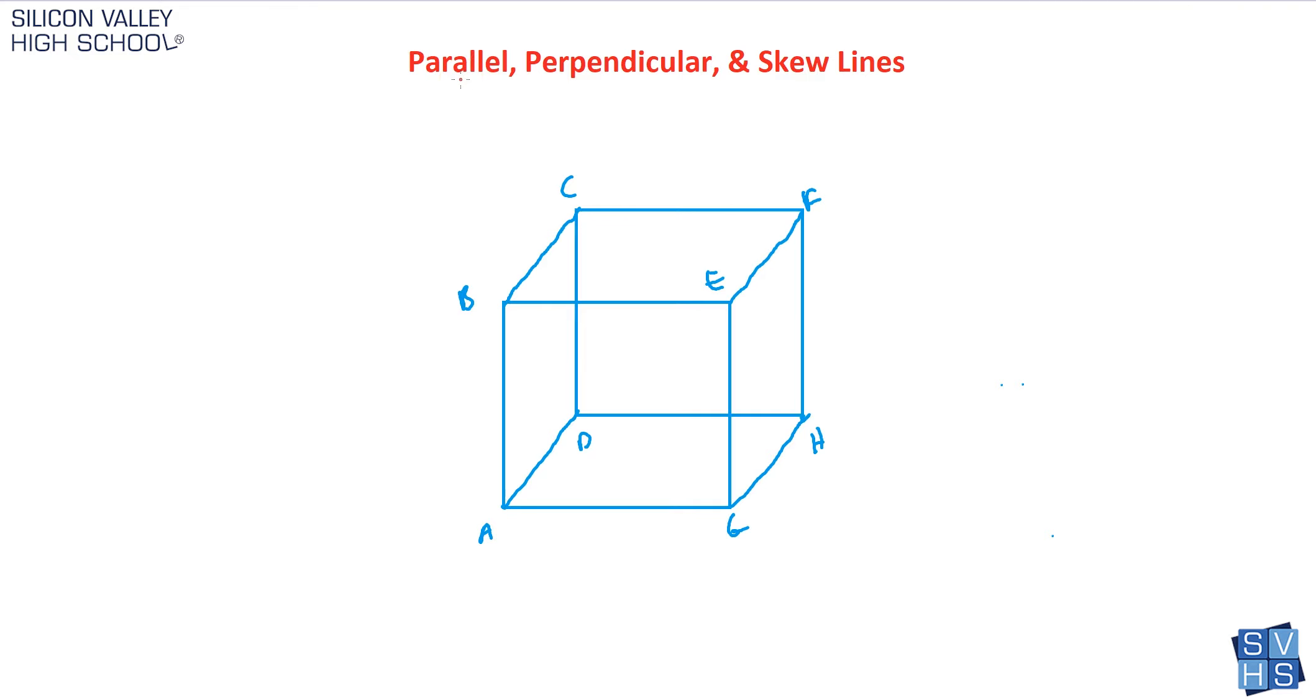Remember, parallel lines have to be on the same plane. If you look at the front face of this cube, that is a plane. The top of this cube, that is a different plane. Remember, it's a two-dimensional flat space that goes on forever in all directions. Another plane would be this side here, EFHG, the right side of this cube.